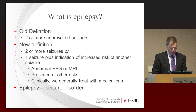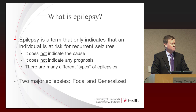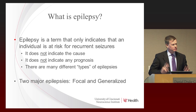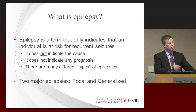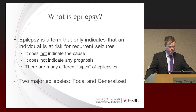Over the years there's been a number of terms for epilepsy, including seizure disorder — they're really the same thing. Epilepsy is a term that indicates someone is at risk for more seizures. It doesn't tell us the cause, and it doesn't tell us anything about the prognosis or how that individual will do. In reality, there are many different types of epilepsies and epilepsy syndromes, so one individual may have a distinctly different seizure type and outlook than someone else with epilepsy.